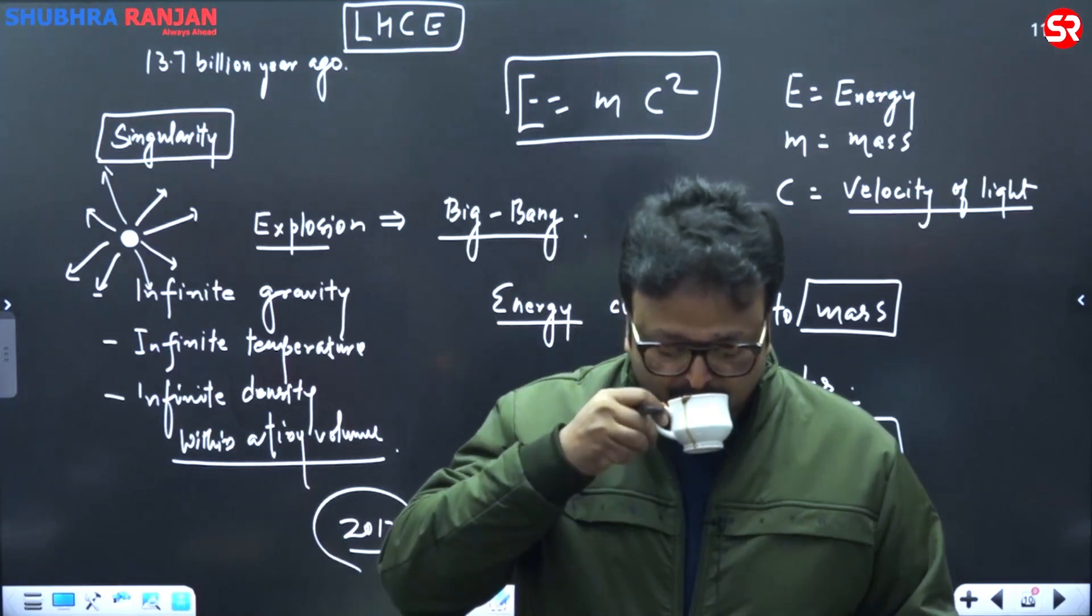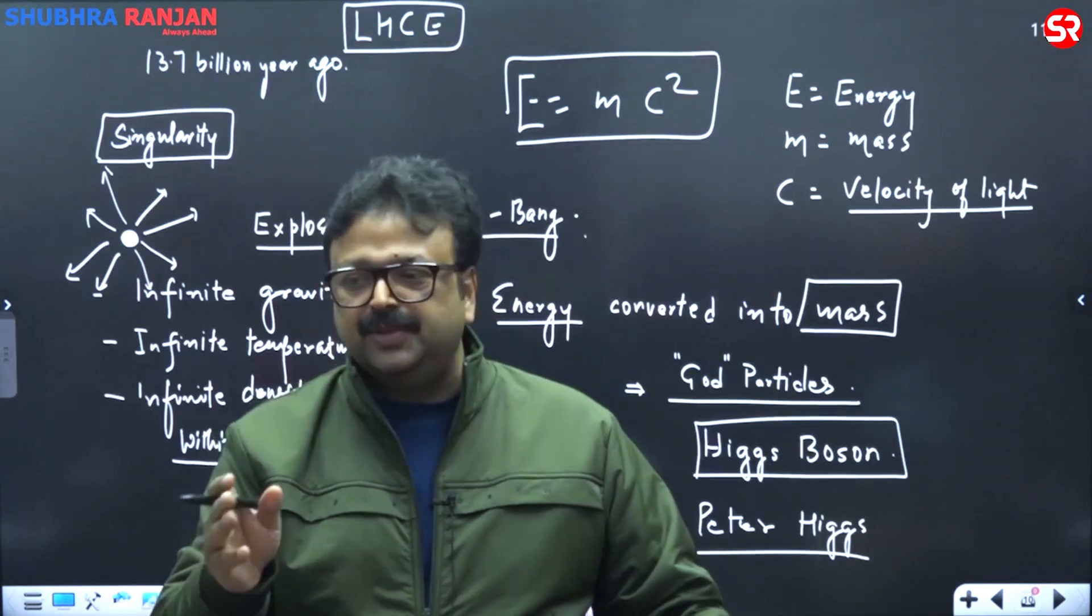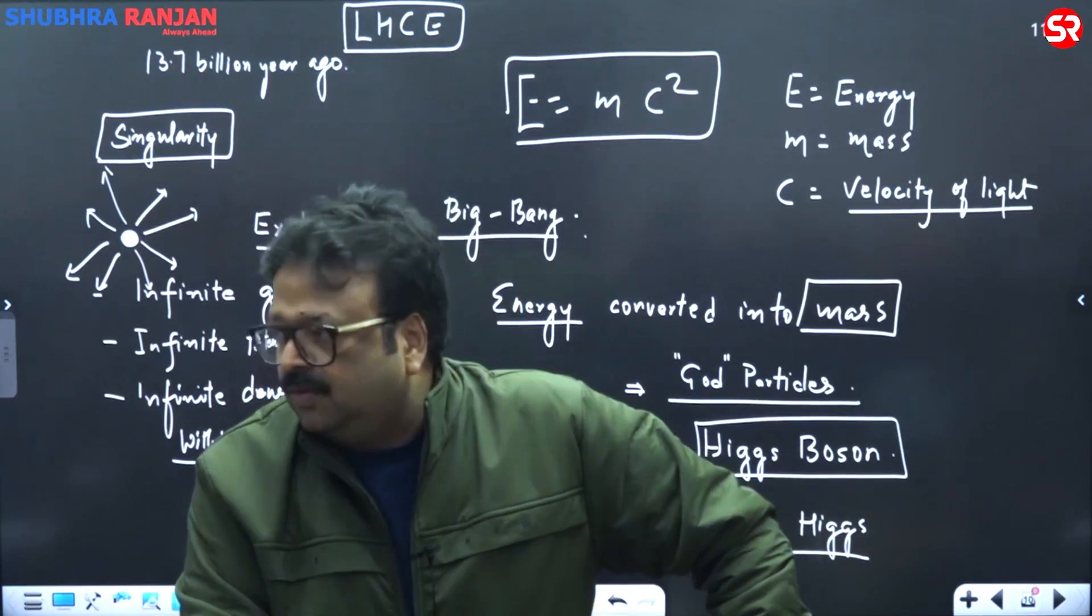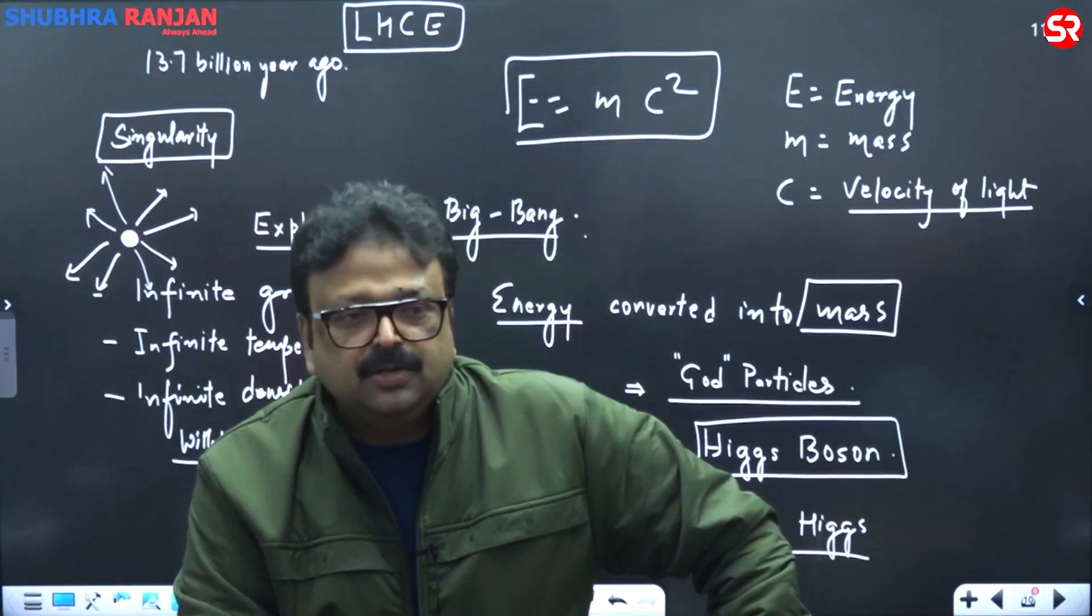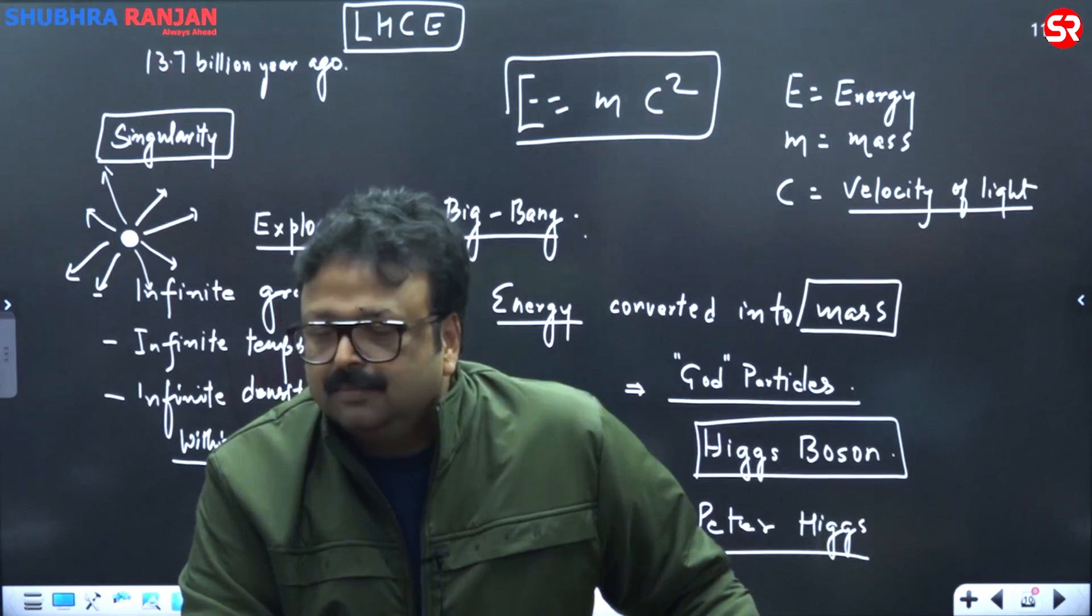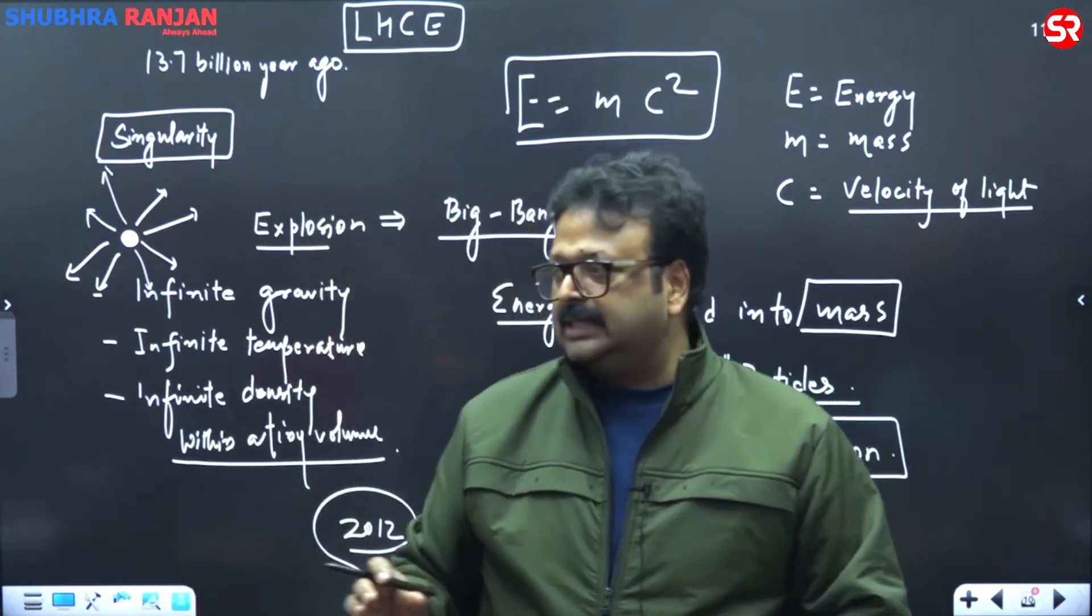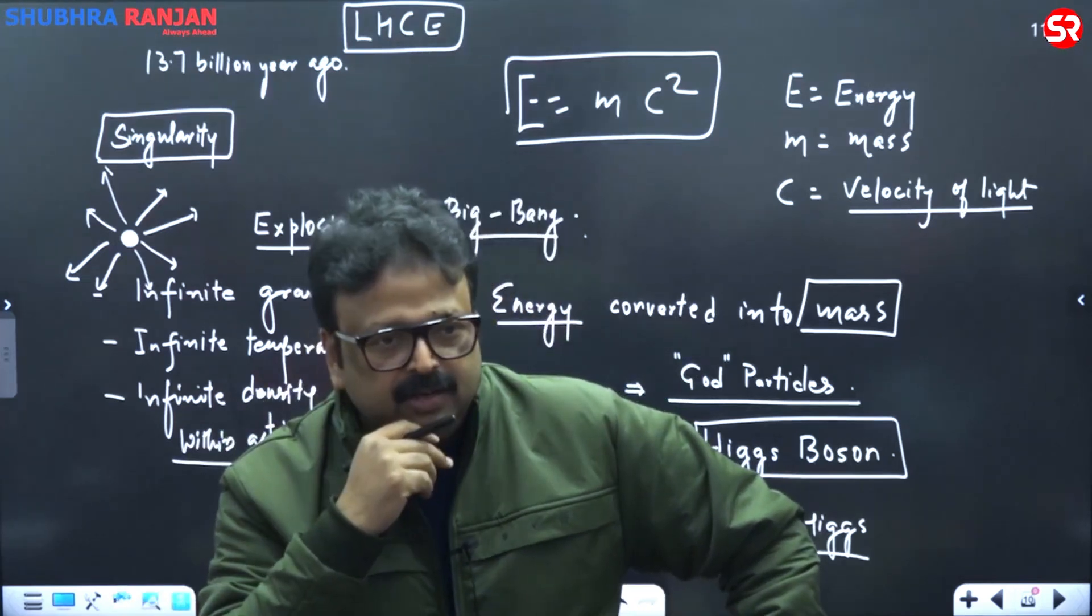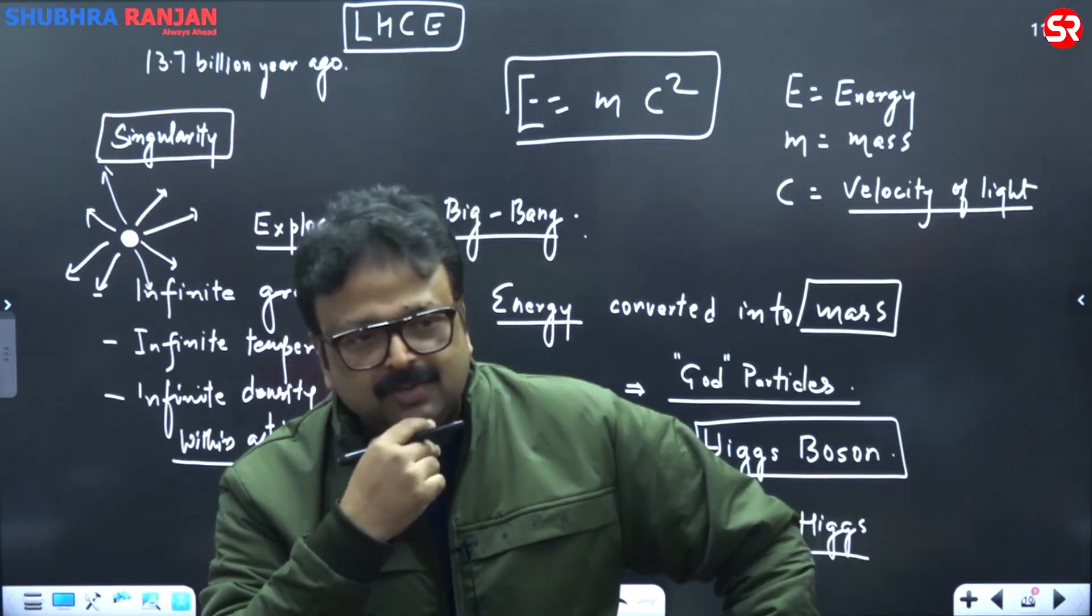And if you go into the story of this naming of God particle, you will find that when this theory was given and Peter Higgs went to the publisher, I have a paper to publish and that speaks about creation of universe. And that is not because of God, it is because of this particle. So initially the name given was anti-God particle. Are you getting my point? Initially, the name of the God particle was anti-God particle in Peter Higgs original paper. Then the publisher got annoyed. How dare to talk like that?